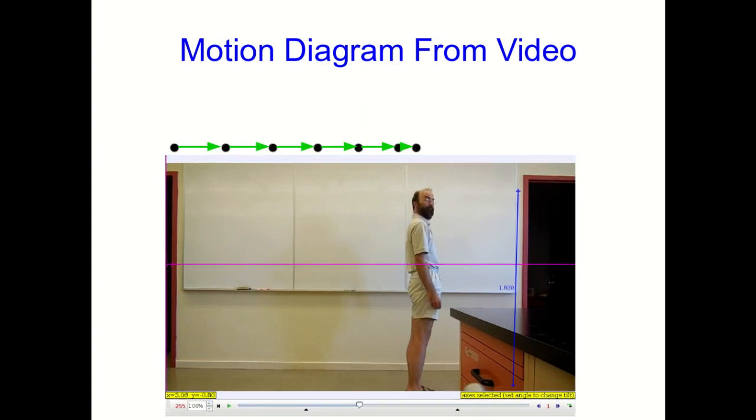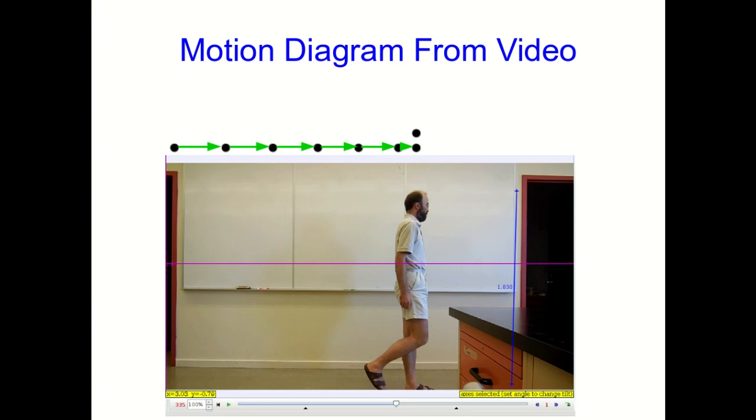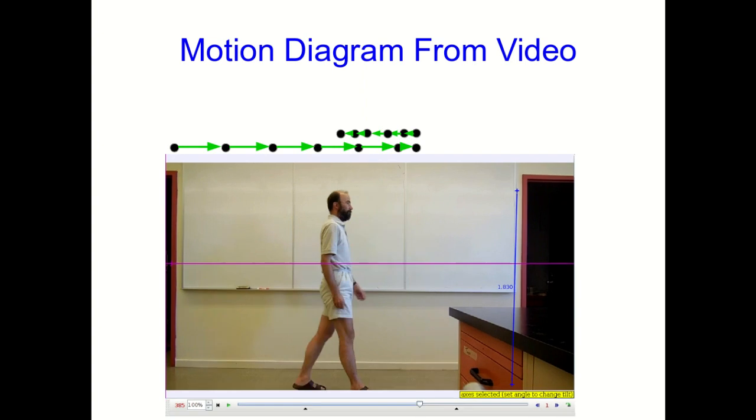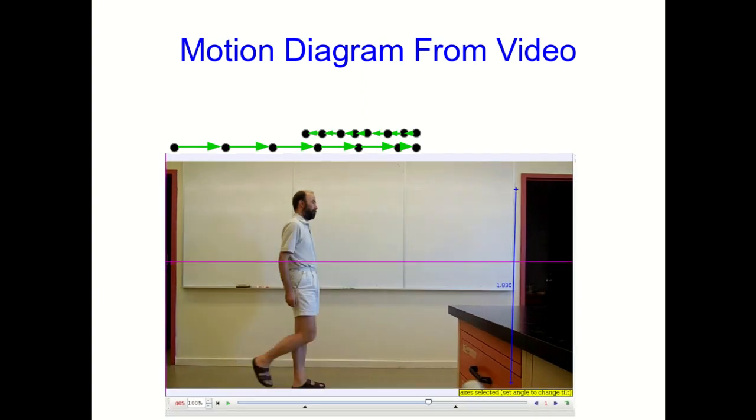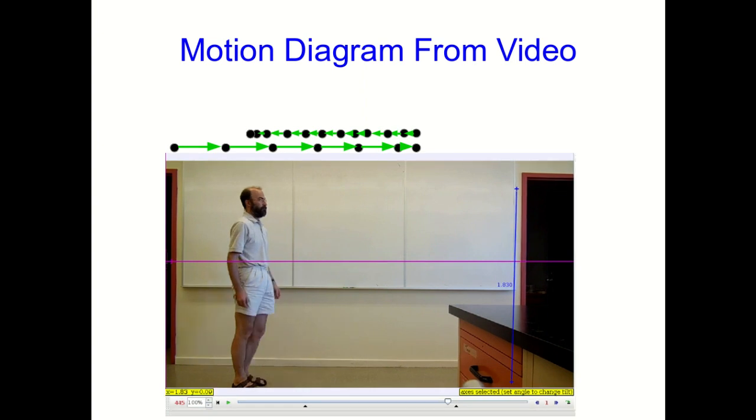And then I stay there uninterestingly for a few frames, which we'll mostly skip. And then I start back, and I do move more slowly going back. And I don't quite maintain a constant speed, but it's pretty close. And there we go, and it's pretty similar to what I had sketched.